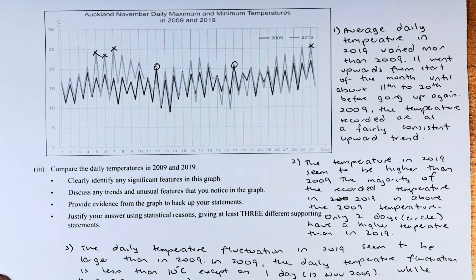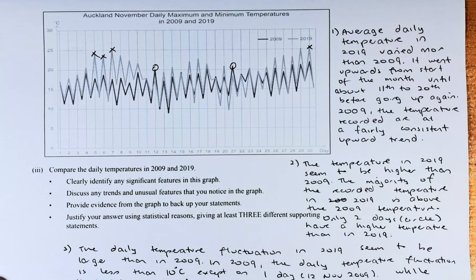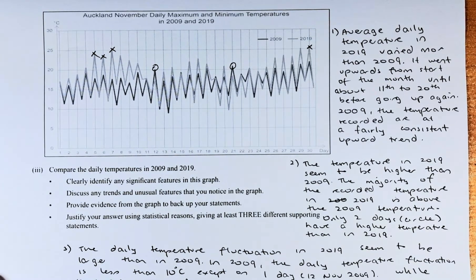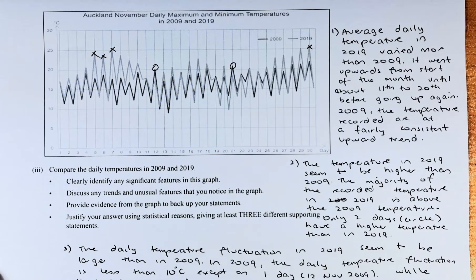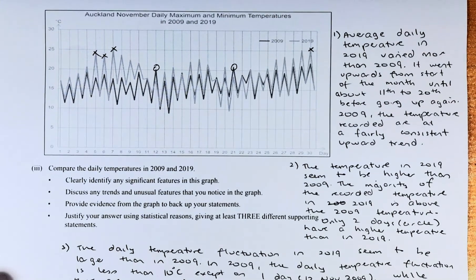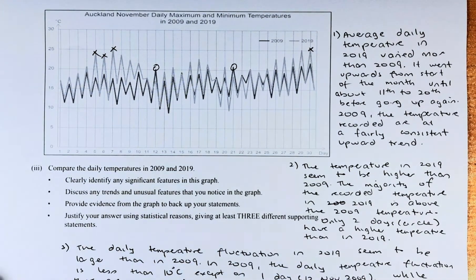This is important because if you only answer 1 point, you'll get the achieve. 2 valid points will be merit and 3 or more will be excellence. So we shall look at the lighter graph and the dark graph.